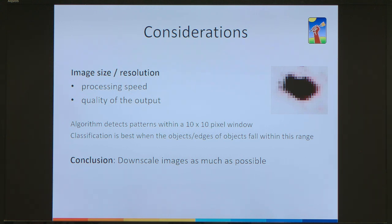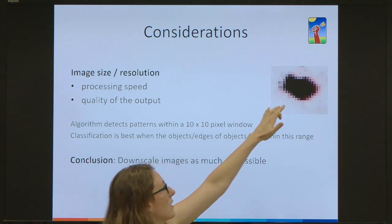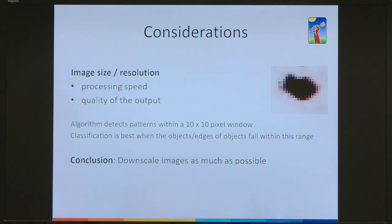A question was raised about what texture means in pixel classification. The algorithm can recognise textural patterns — it detects patterns within a 10 by 10 pixel window. So if you have light pixels followed by slightly darker pixels and then very black pixels, that is a pattern it can recognise. It recognises edges not just based on intensity difference, but also based on the light-to-dark texture gradient.